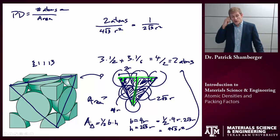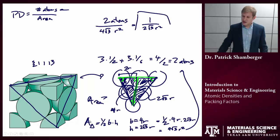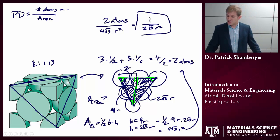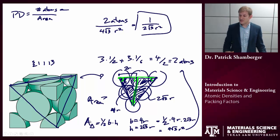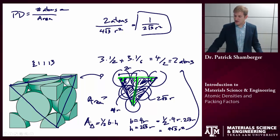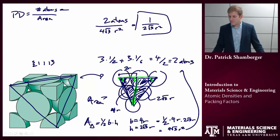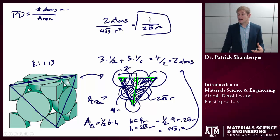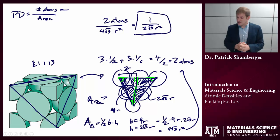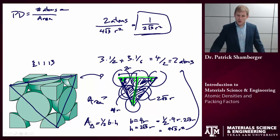We're finding a higher planar density than we did with the [1,0,0] family of planes, and this makes sense because the [1,1,1] family of planes is actually a close-packed family of planes — you can tell that by the triangular, hexagonal packing in this plane. This is actually the highest packing density you can get for spheres that all have the same size. So that is planar density.